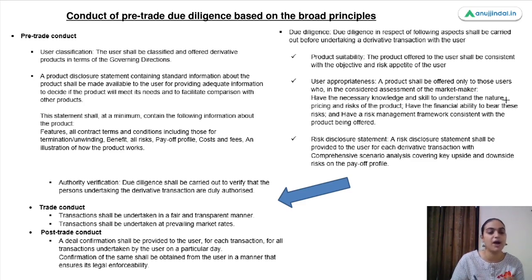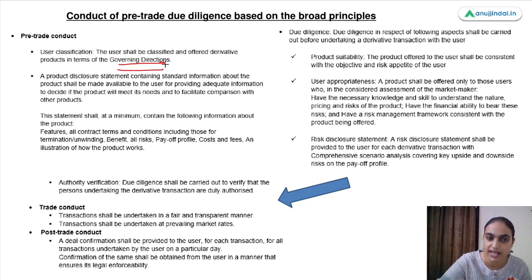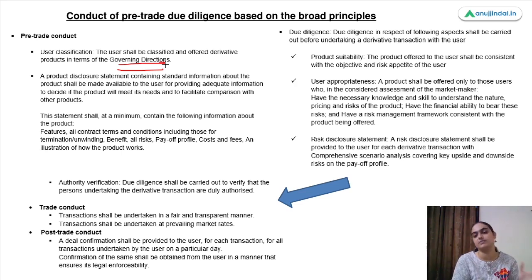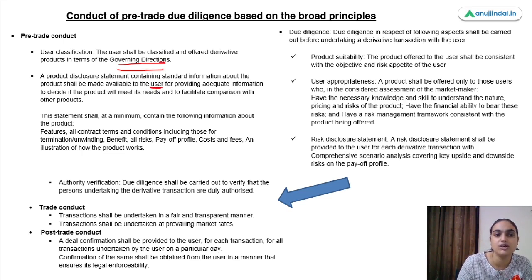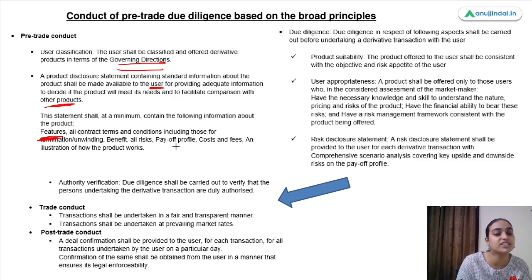Coming to pre-trade due diligence. Before trading, you need to do user classification — users shall be classified and offered derivatives as per governing directions, separating higher-risk from lower-risk users. A product disclosure statement is needed, containing standard information about the product to help users decide if it meets their needs and facilitate comparison with other products. It should include features, terms and conditions, benefits, risks, payoff profile, costs, fees, and how the product works.